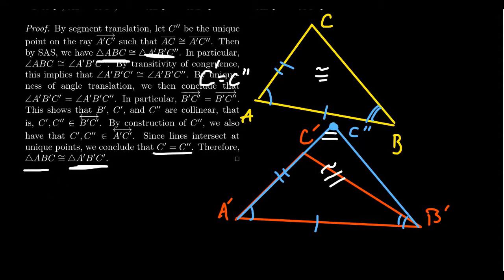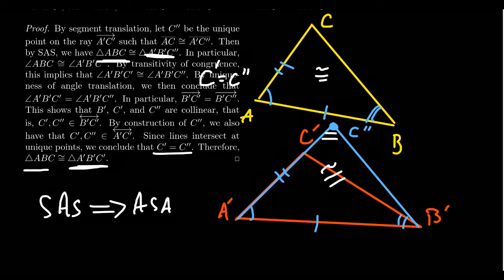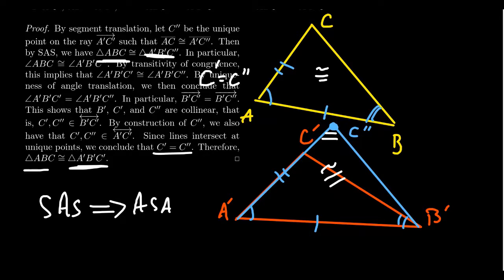To summarize what we've done: in our congruence geometry, we assumed side-angle-side as our axiom of triangle congruence. We then proved that angle-side-angle is a theorem of congruence geometry. The proof used segment and angle translations, transitivity of congruence, and other axioms — but the main argument was turning an angle-side-angle situation into a side-angle-side situation, getting triangle congruence, and then confirming it was still the same triangle.